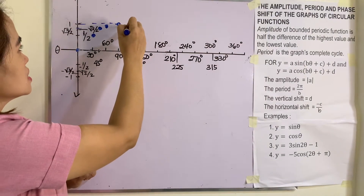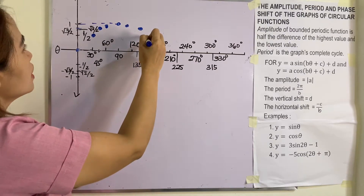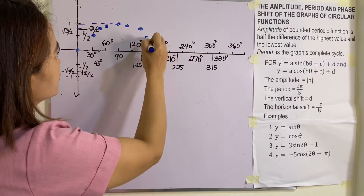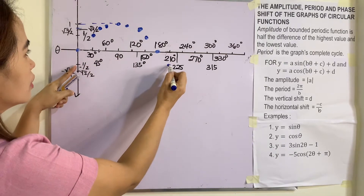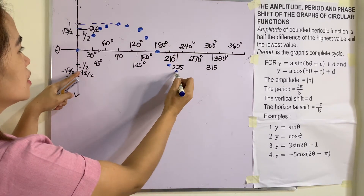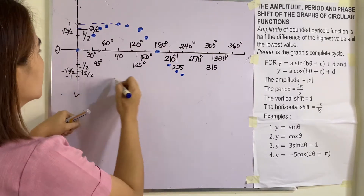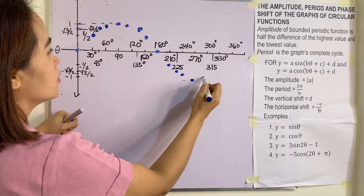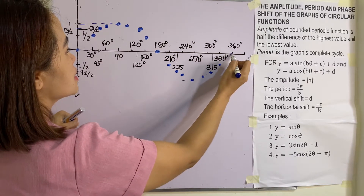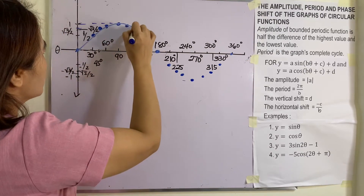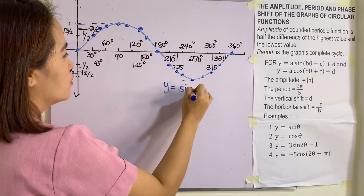The graph keeps repeating the cycle. Continuing: sin 120° = √3/2, sin 135° = √2/2, sin 150° = 1/2, sin 180° = 0. Then sin 210° = -1/2, sin 225° = -√2/2, sin 270° = -√3/2, sin 300° = -1, and it follows the cycle back. This gives us one complete cycle of the sine function, y = sin θ.